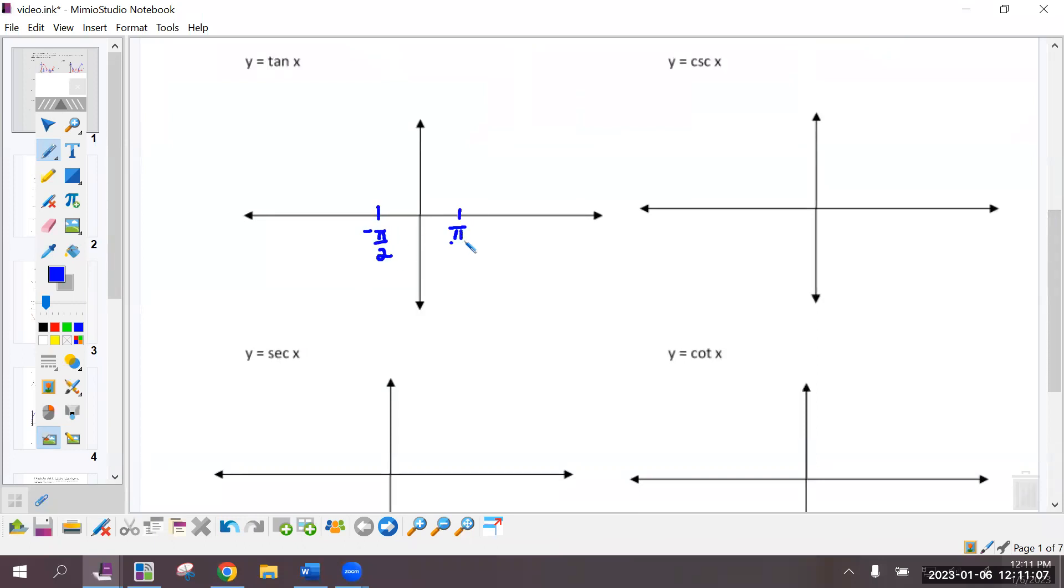So for tangent, now we're going to have asymptotes. And if I think about our circle from our prior unit, tangent is y over x. So anywhere the x coordinate is 0, tangent will have an asymptote. So that's at negative pi over 2, positive pi over 2, 3 pi over 2. And we're going to go through the origin and the tangent graph is increasing. Go through pi. So there's two periods of tangent.